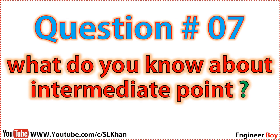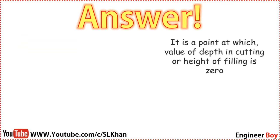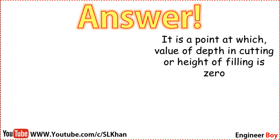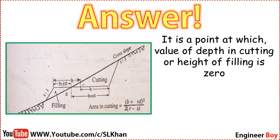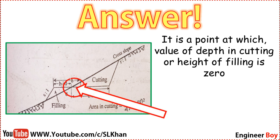Question number seven: what do you know about intermediate point? An intermediate point is a point at which the depth of cutting or height of filling is zero. When going from filling to cutting or from cutting to filling, there is a point that has neither cutting nor filling — that point is known as an intermediate point.